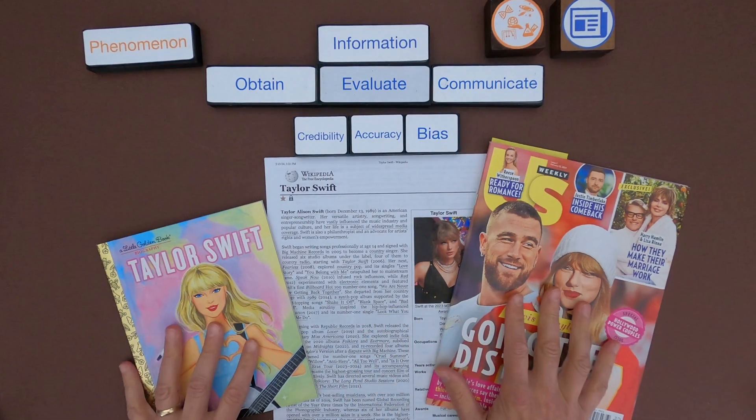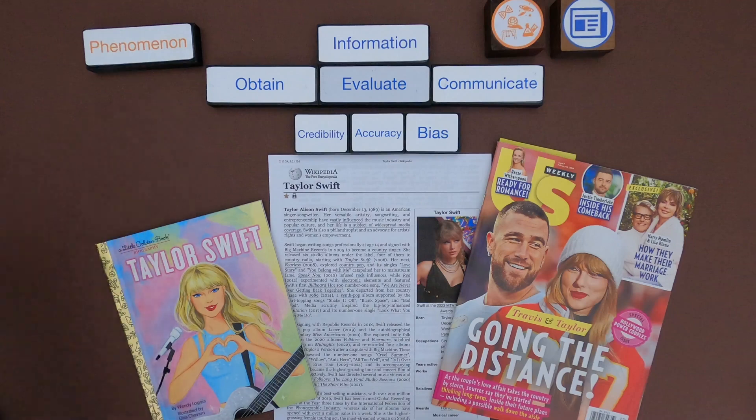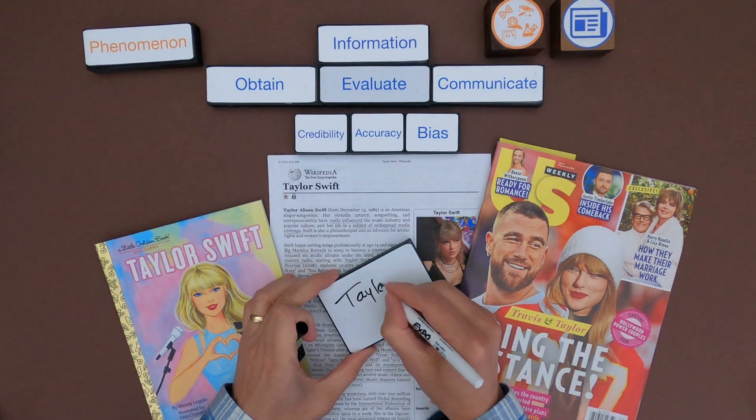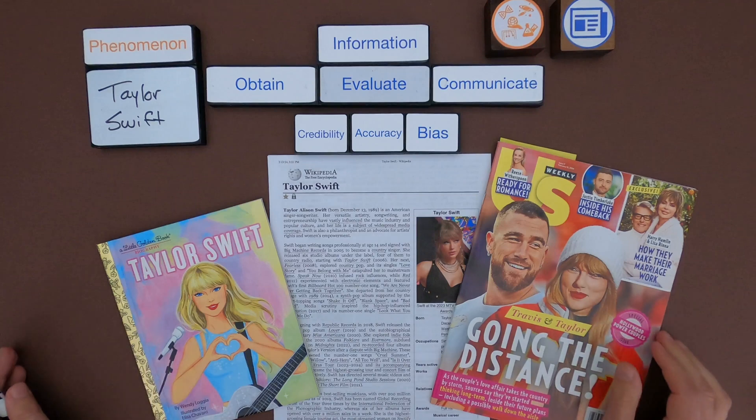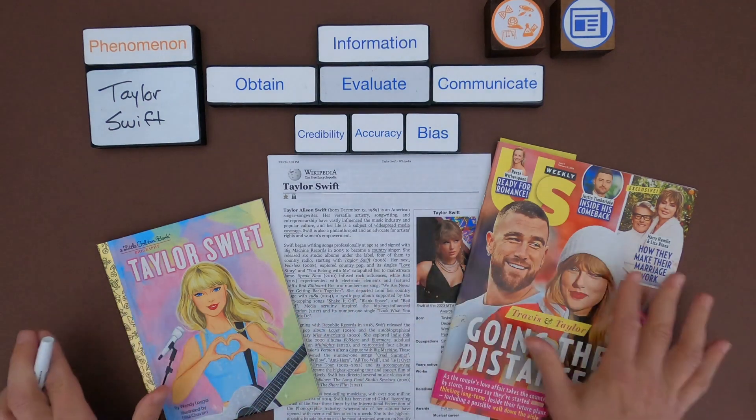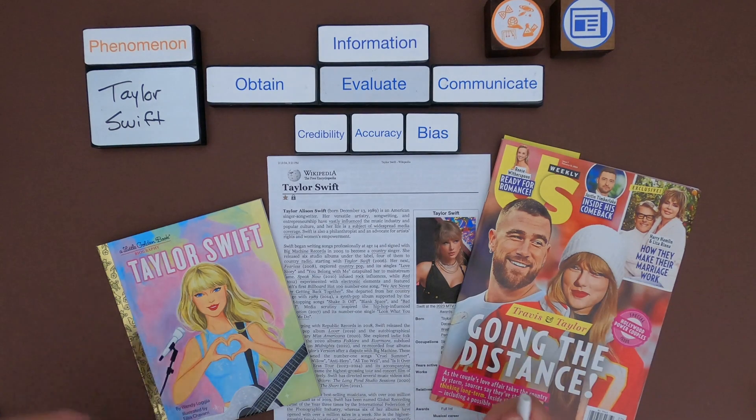Okay so you can see that I have three sources. The first thing I want to do as we look at these is I want to identify what's the phenomena. And then the next thing I want to do is I want to write down what are the sources. So we'll call this source 1, source 2, and source 3.